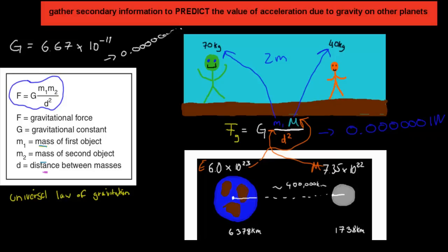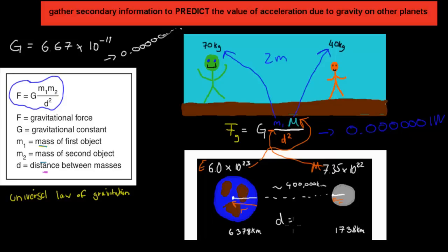What we still have to consider is that when it comes to gravity, we don't start at the surface — we talk about the radius. It starts in the center, so we have to look at the radius of both the Moon and the Earth, and add that to the actual distance between the surfaces. So we have 400,000 plus 6,378 — because that's the radius of the Earth — plus 1,373 — because that's the radius of the Moon. Add that all together and that would be our D, something like 408,000 kilometers.